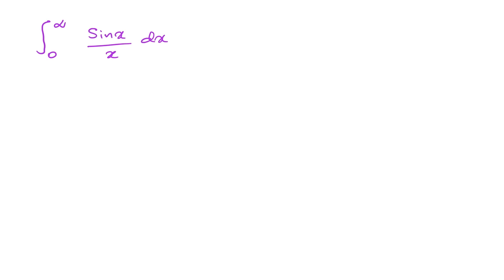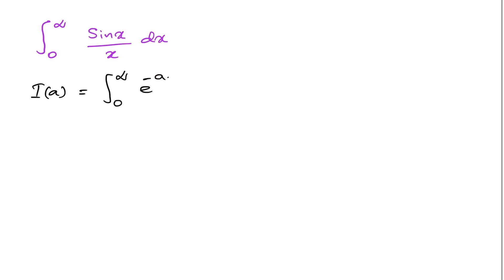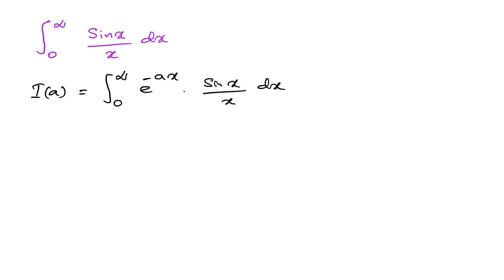To solve this integral using the Feynman technique, I am going to define an integral I(a), where I(a) is equal to the integral from 0 to infinity of e^(−ax) times sin(x) over x dx. If we plug in a = 0, then I(0) is equal to the integral from 0 to infinity of sin(x) over x — that's our original integral. So our integral equals I(0).